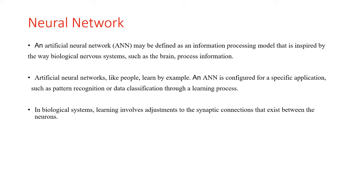In a biological system, learning involves the adjustment to the synaptic connections that exist between neurons. The Artificial Neural Network undergoes a similar change when the concepts on which they are built move from the academic environment into the world of users who simply want to get a job done by computers accurately. Many Neural Networks being designed are statistically quite accurate, but they still leave users with a bad taste as they falter when it comes to solving problems accurately.